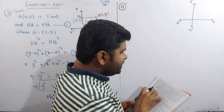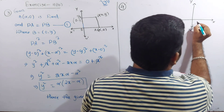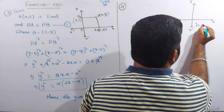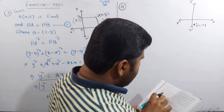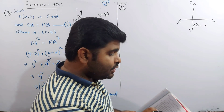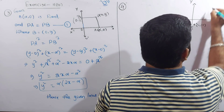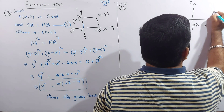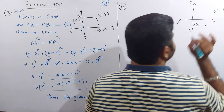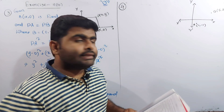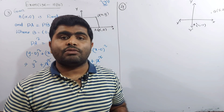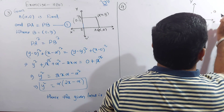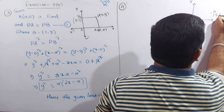A is the point (1, −1): x is 1, y is −1. B is the point (5, 2): x is 5, y is 2. This is point A and this is point B at (5, 2).